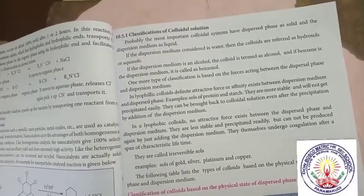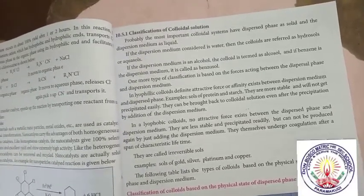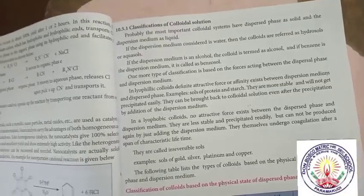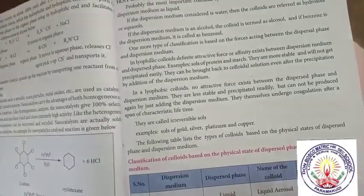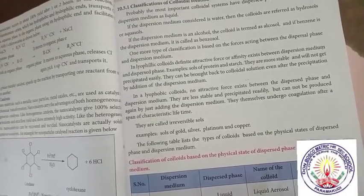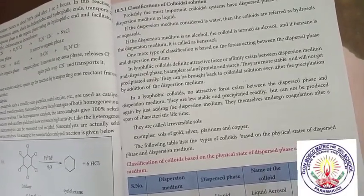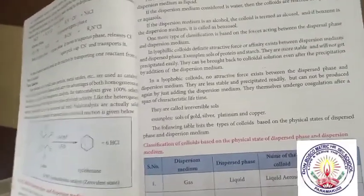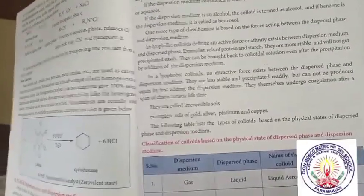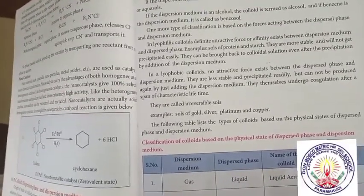Lyophobic colloids undergo coagulation after a span of characteristic lifetime. They are called irreversible sols. Examples are sols of gold, silver, platinum, and copper.